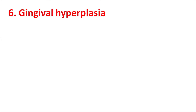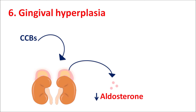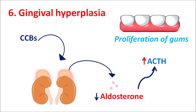Sixth: gingival hyperplasia. CCBs — particularly dihydropyridines and diltiazem — can produce gingival hyperplasia. These drugs reduce the synthesis of aldosterone in the adrenal cortex, because calcium is required for aldosterone synthesis. Blocking calcium-dependent aldosterone synthesis reduces aldosterone levels, triggering a negative feedback mechanism that increases ACTH production from the anterior pituitary. Elevated ACTH increases testosterone synthesis, which promotes proliferation of the gums, resulting in gingival hyperplasia. This side effect is particularly observed with chronic use, such as after one year of verapamil treatment.